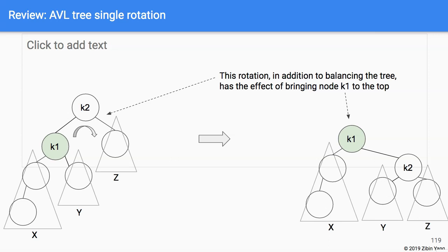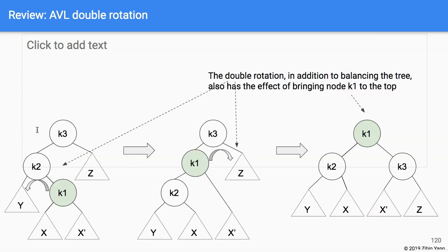Let's do a quick review of how AVL tree rotations work. In a single right rotation, we bring node k1 to the top of the tree. For the double rotation, we rotate one way and then the other way to bring k1 to the top. This is essentially how splay trees bring nodes from the bottom towards the top.